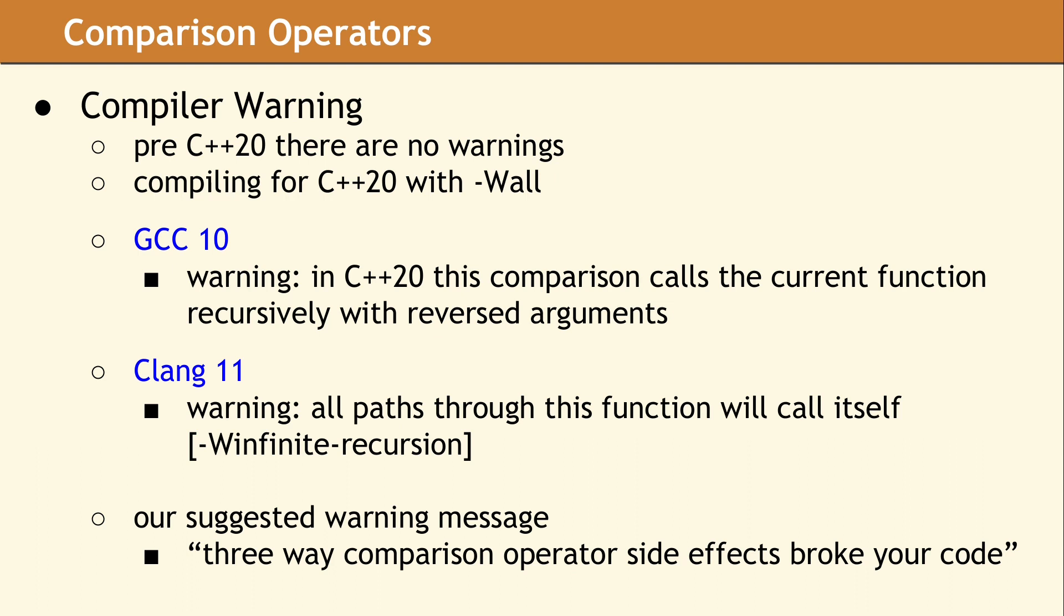At the time we were debugging our code, we were not compiling the unit tests with all warnings turned on. If we had, then we might have found the culprit a bit sooner, but maybe not. When you compile this code using gcc with dash W all turned on, you get a warning that the free function calls itself recursively with reversed arguments. The clang warning is actually a bit more vague and simply says, all paths through this function will call itself. It would have been nicer if the message had said something like, the three-way comparison operator side effects broke your code.